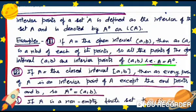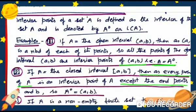Example 2: If A equals the closed interval [a, b], then every point of A is an interior point of A except the endpoints a and b. So A° equals the open interval (a, b).